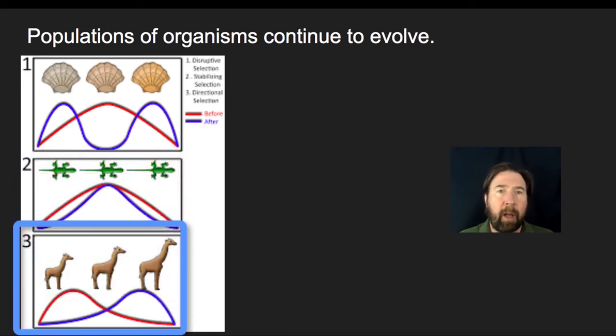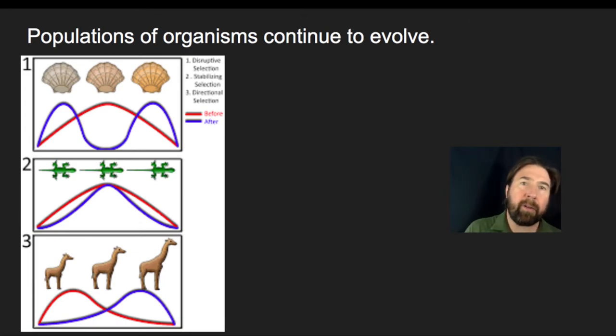And then what we have is on the bottom directional selection, and oftentimes we see the example of the giraffe as a species that would have undergone selective pressure, where there was an open niche to eat canopy leaves, and therefore each successive generation, those with the longer necks survived and reproduced. And then over many generations, the average neck length increased, and so that's the idea that over time, one extreme form would be selected for. And so those are our three general patterns we tend to see in selection.